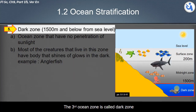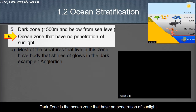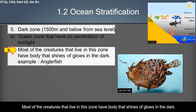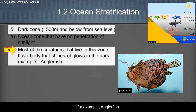The third ocean zone is the dark zone, located at 1,500 meters and below from sea level. The dark zone receives no penetration of sunlight at all. Most creatures living here have bodies that shine or glow in the dark — for example, the anglerfish.